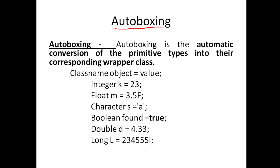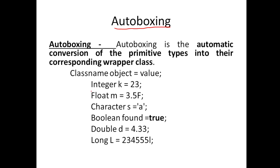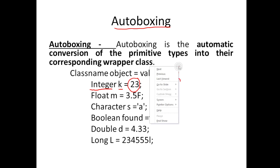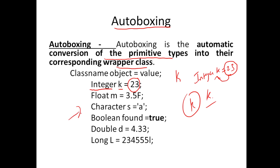There's a concept called auto boxing. Earlier we did 'Integer a = new Integer(value)'. With auto boxing, you just write 'Integer k = 23'. The value 23 is automatically taken and an object of type Integer k is created. This is the automatic conversion of primitive types into their corresponding wrapper class object. You can do 'k.something()' directly.